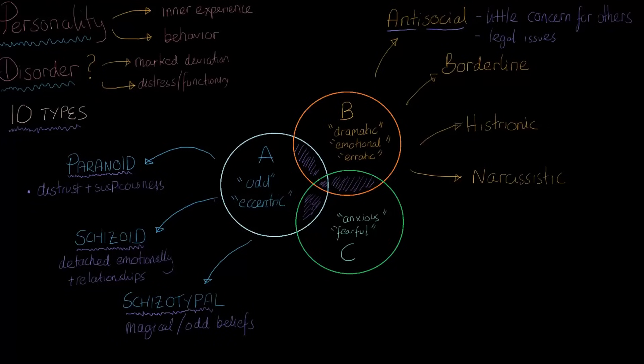Secondly, we have borderline. People on the borderline are always at the brink of having some kind of emotional or relationship issue. They have very unstable relationships. Their emotions can actually be pretty unstable too, and they could have a really variable self-image. They can be pretty impulsive, and this can put them in quite a lot of danger.